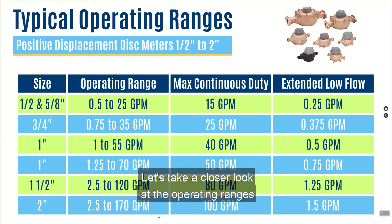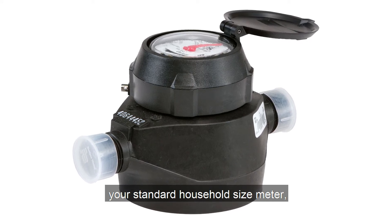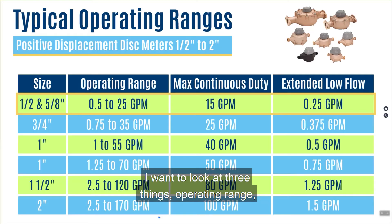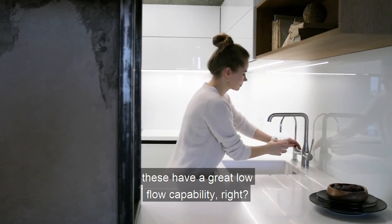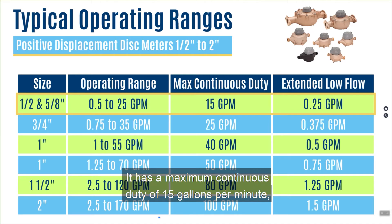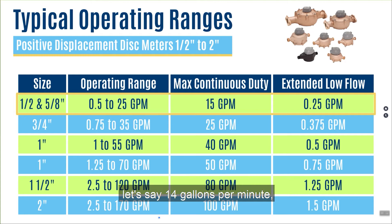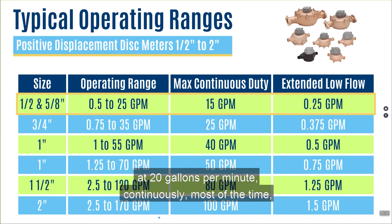Let's take a closer look at the operating ranges of typical small meters, starting with the standard household size — the half-inch or five-eighths meter. Looking at three things: operating range, maximum continuous duty, and extended low flow. A half-inch or five-eighths meter has great low flow capability — readable down to a half gallon per minute, all the way up to 25 gallons per minute, plus or minus one and a half percent. Its maximum continuous duty is 15 gallons per minute. An application running at 14 gallons per minute most of the time could still use this meter, but if an application runs at 20 gallons per minute continuously, you'd need to upsize to the three-quarter-inch meter.